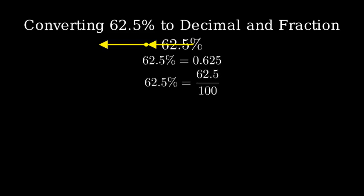Now let's convert to a fraction. The first step is to write the percentage as a fraction over 100. 62.5% is the same as 62.5 over 100.